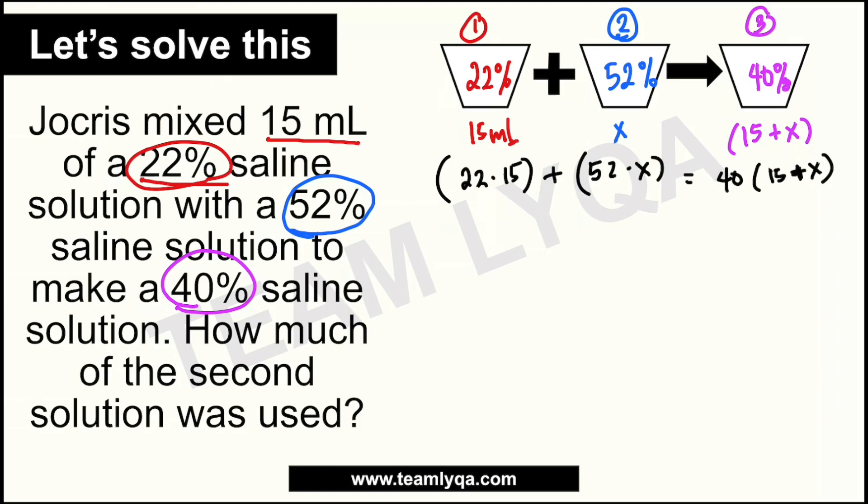I prefer not using decimals — binubuong number ko lang sila, para less na bagay sa isip. Dahil pare-pareho naman silang percent, parang in the same way na pag nag-move tayo ng decimal place, since lahat naman sila pantay-pantay. Mas gusto ko lang siya kasi kung 0.22 times 15 yung nakalagay, it adds another layer of difficulty dun sa problem.